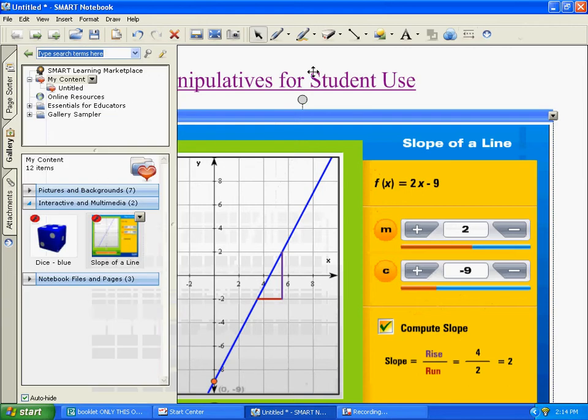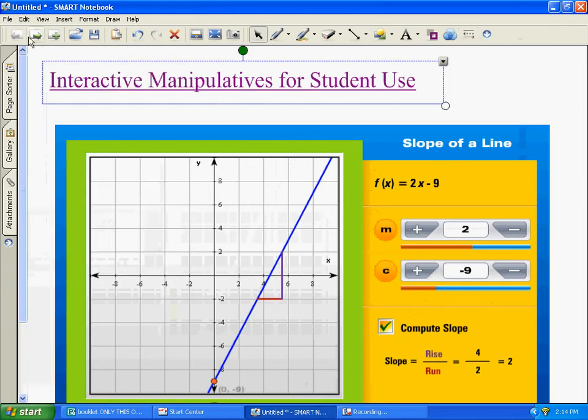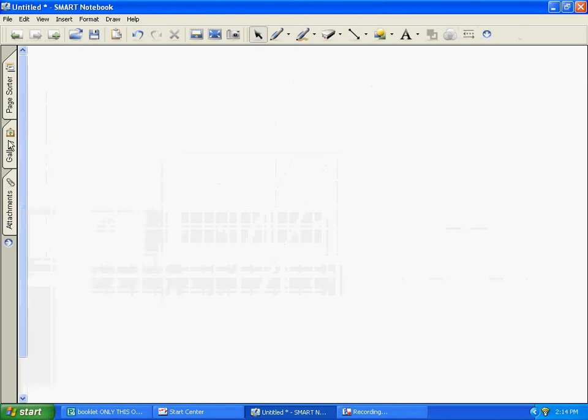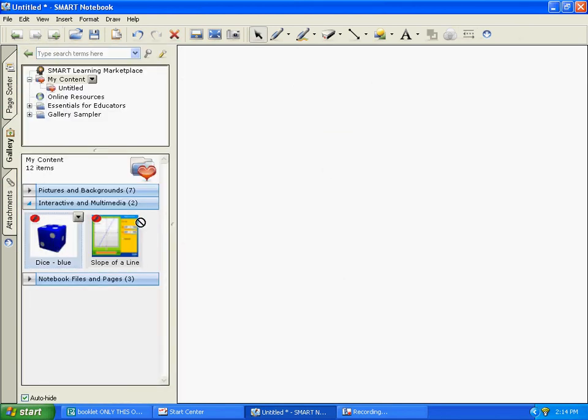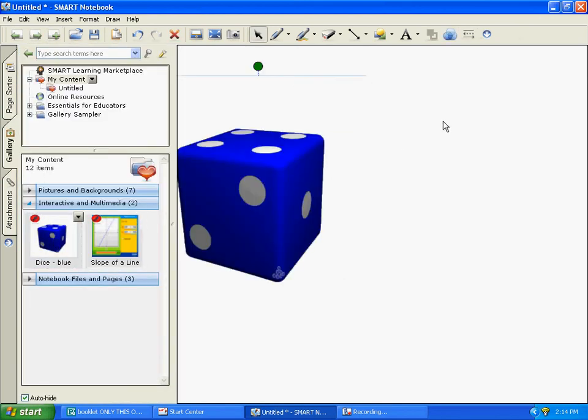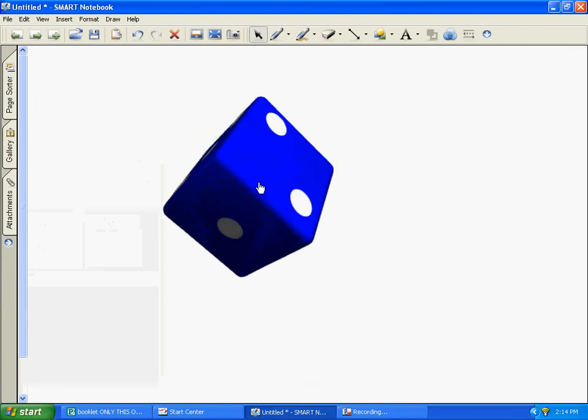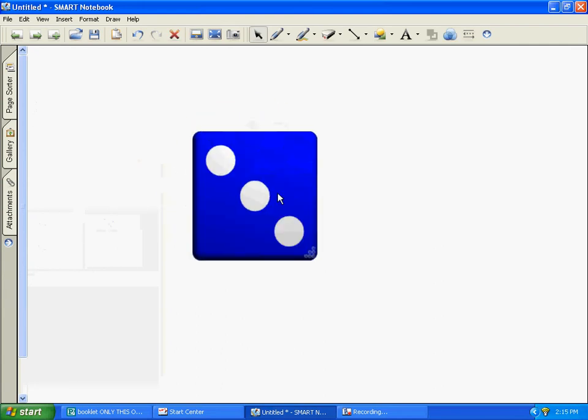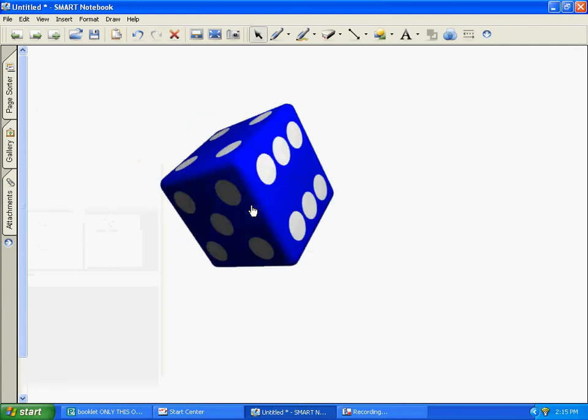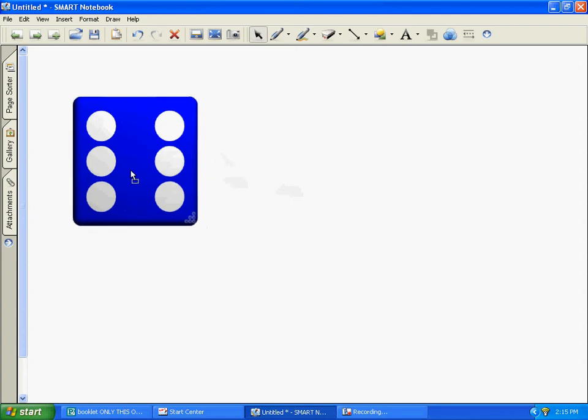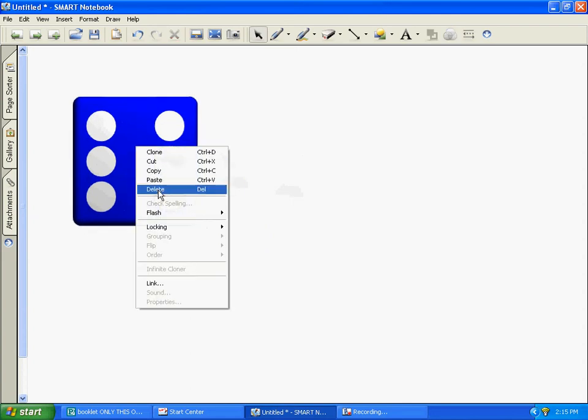Another manipulative it has - if you were working on a unit on probability or any type of random number generator, we could use this rolling of a die to select numbers. We could use two dice if we'd like.